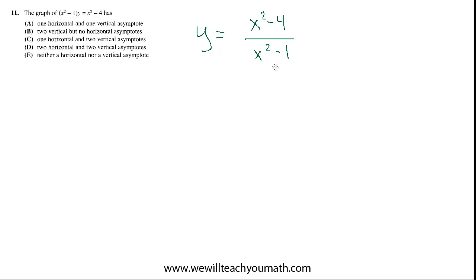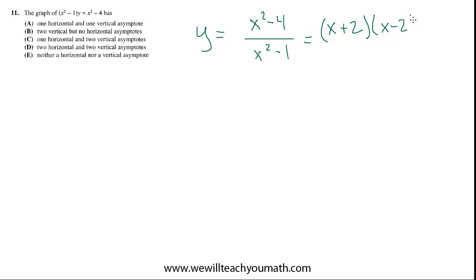Now let's talk about horizontal and vertical asymptotes and where they come from. When you want to find vertical asymptotes, you have to ask yourself: where does the denominator equal 0? But you also have to ask an additional question: do any of those values that make the denominator 0 come from factors that cancel with factors in the numerator? Let's do this by example. We factor both using difference of two squares, getting (x plus 2)(x minus 2) over (x plus 1)(x minus 1).